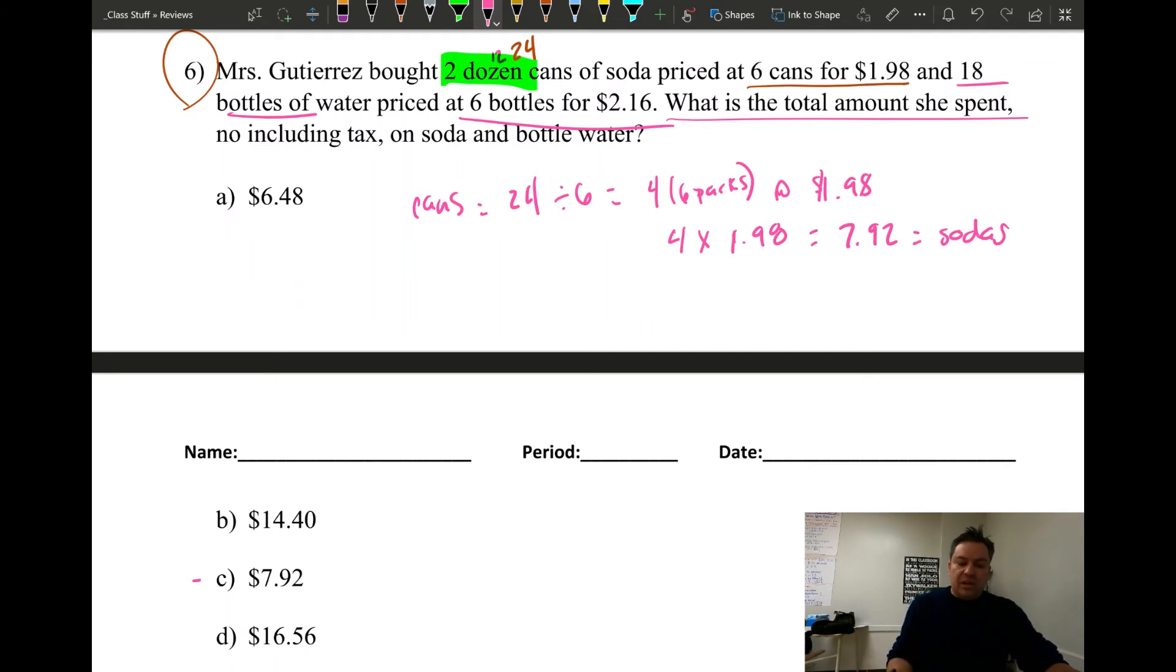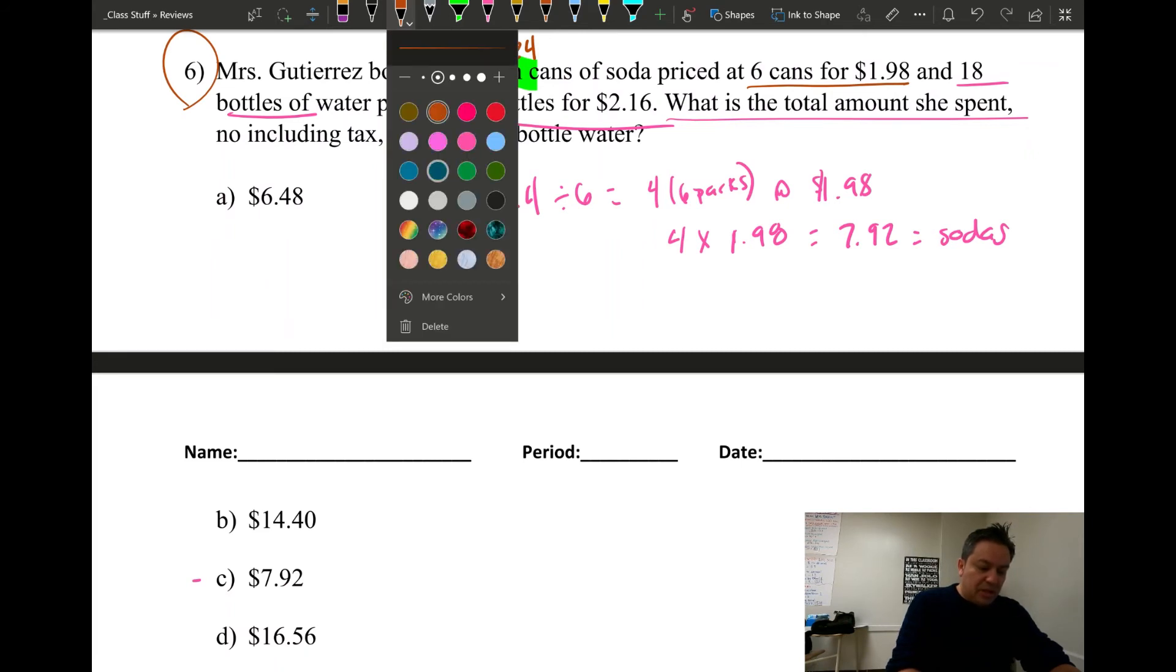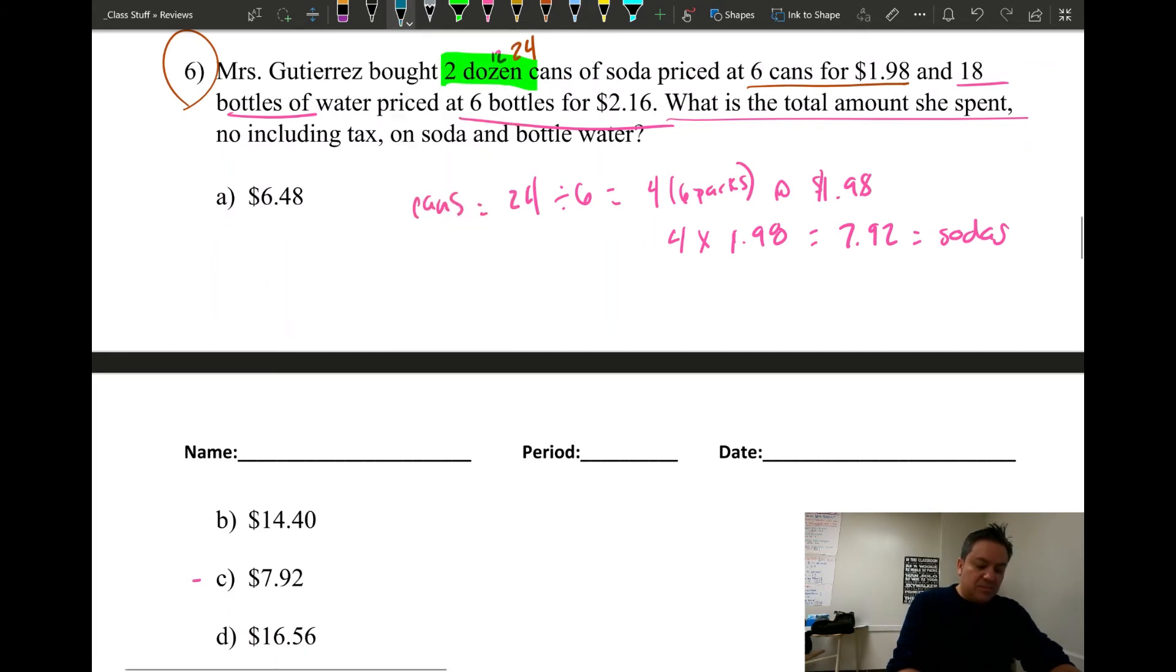However, I'm not done because I just found how much she paid for the sodas. Now I gotta do something similar but for the bottles of water. For the bottles of water, it's going to be something similar. She bought 18 bottles and every six bottles is $2.16. So water, she bought 18 of them, so divided by six because that's what it says right here, equals three. Now you can multiply that by how much is a six-pack of water, which is $2.16. So three times $2.16, she paid $6.48 for the water. And look, this is an answer right there as well.